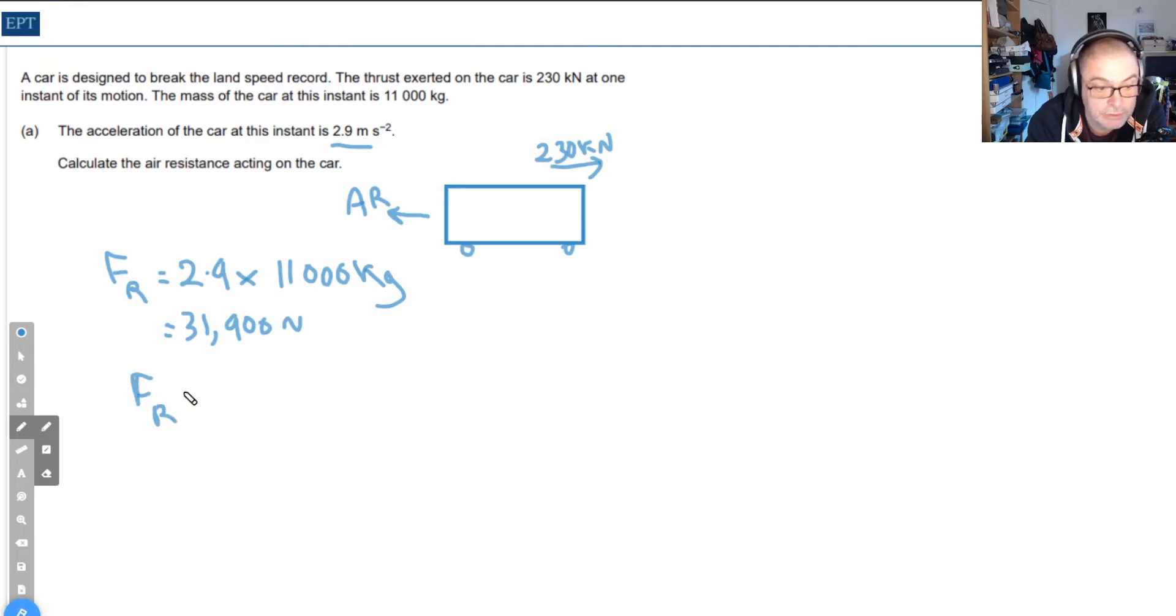The resultant force is also equal to 230 kilonewtons minus the air resistance. Therefore, the air resistance equals 230,000 newtons minus 31,900 newtons, which gives us an answer of 198,000 newtons.